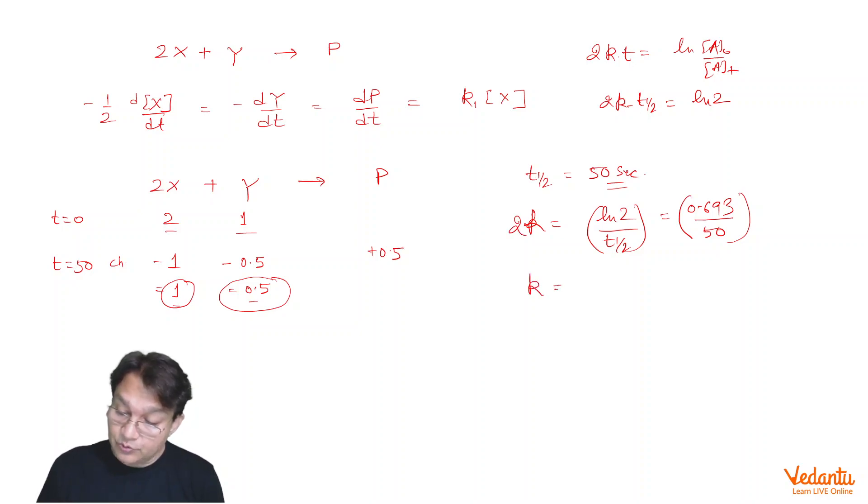And that means k is equal to 0.693 upon 50 times 2, which equals 0.693 times 10⁻², which we can write as 6.93 × 10⁻³. That should be the rate constant.